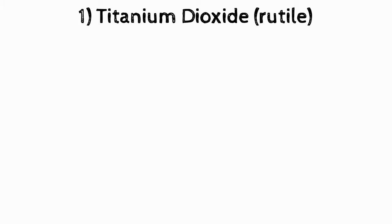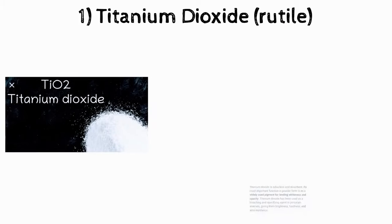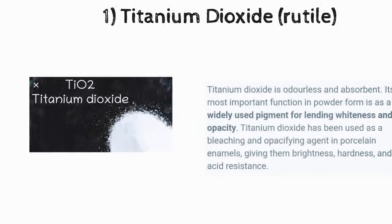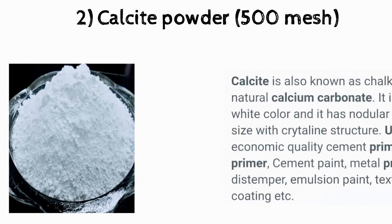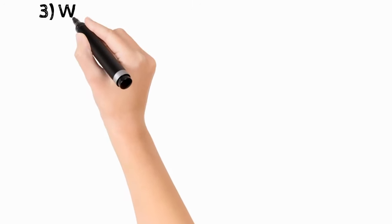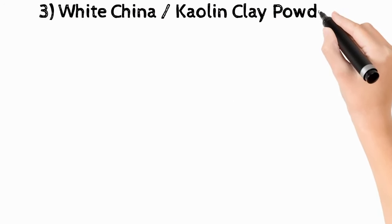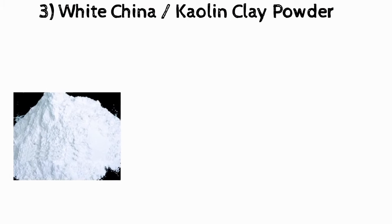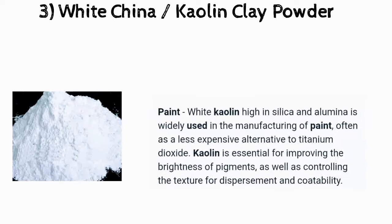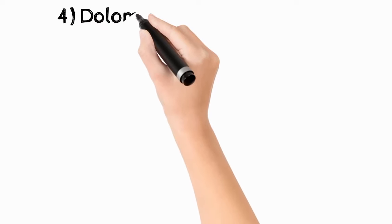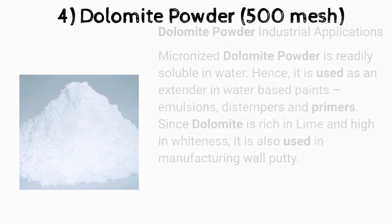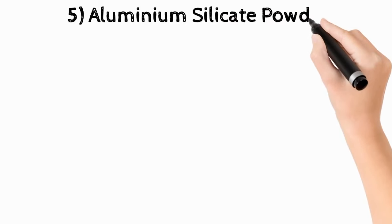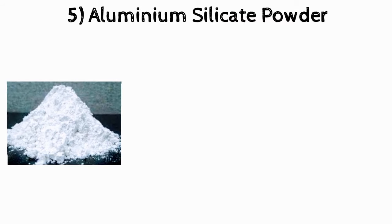The first raw material you need for making glossy distemper is titanium dioxide powder. The second is super white calcite 500 mesh powder. The third is white calcite china clay powder. The fourth is super white dolomite 500 mesh powder. The fifth is white aluminium silicate powder.